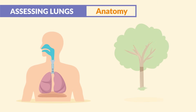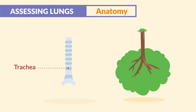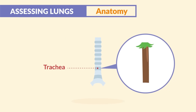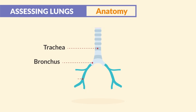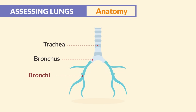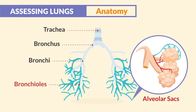The respiratory system sort of looks like an upside-down tree. We have the trachea, also called the windpipe, which serves as the stump of the tree, branching off into the bronchus — the right and left — then to the bronchi, our smaller branches, and the bronchioles, the very tiny branches, eventually ending at the alveolar sacs, which I call the alveolar apples, because this is where all the action happens.